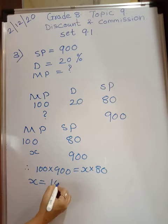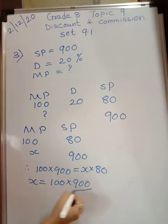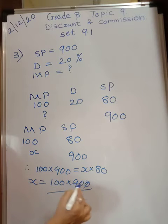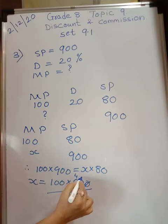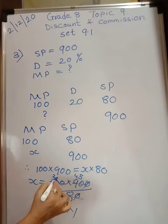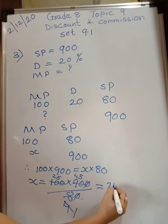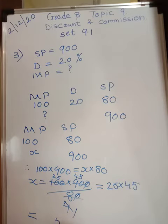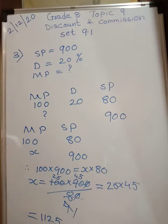So x will be 100 into 900 upon 80. Cancel the zeros. You have 2 fours and 2 forty-fives — 4 ones are 4, 4 twenty-fives — so your answer will be 25 into 45, which equals 1125. So this is your marked price.